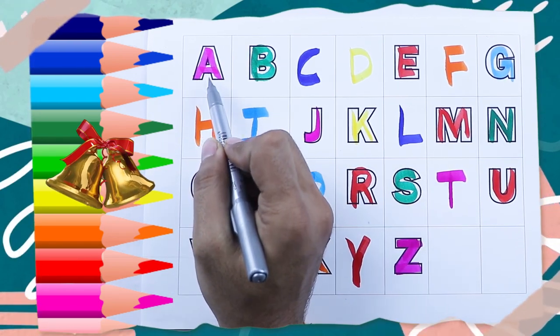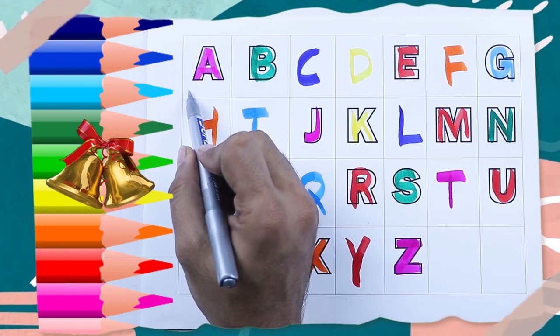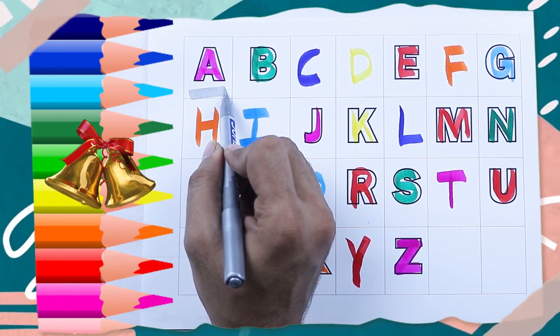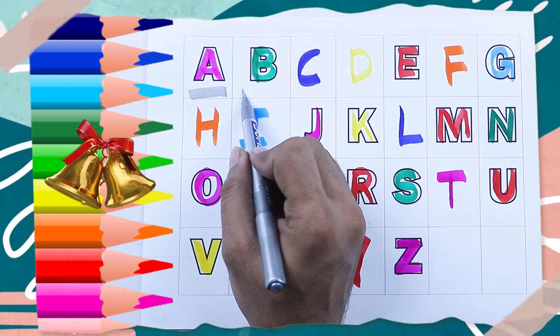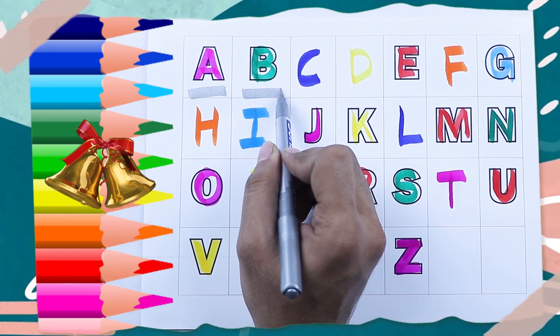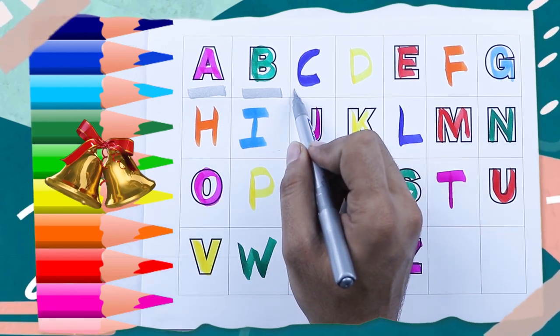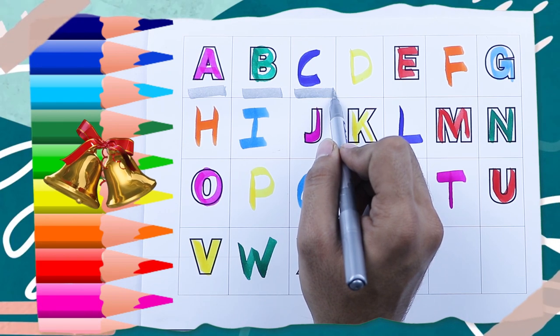Which color is this? Pink color. Pink color A. A for apple. B for ball. Green color B. Blue color C. C for cat.